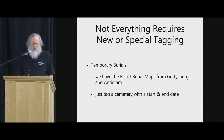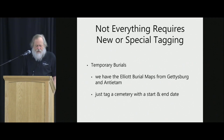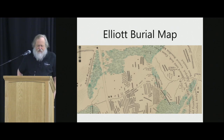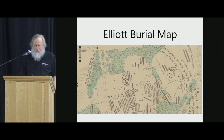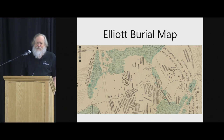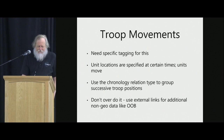Not everything needs new special tagging. There are temporary burials, for example, in the aftermath of a battle. For the Elliott burial maps, you just tag a cemetery and give it a start and an end date. This is a snippet from the Elliott burial map of the Antietam battlefield — a part important to me for family reasons, because my great-great-grandfather and great-great-grandmother lived in a farmhouse just north of the Northwoods at the time of the battle. That's why I obsess over the Maryland Campaign of 1862.